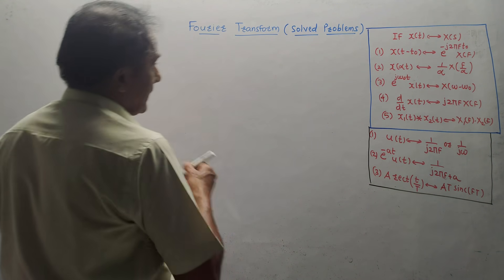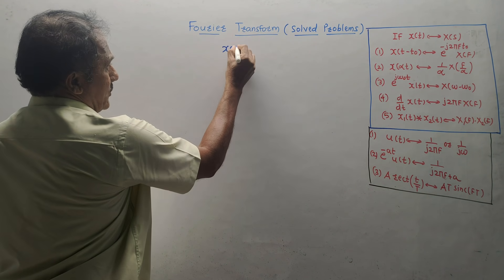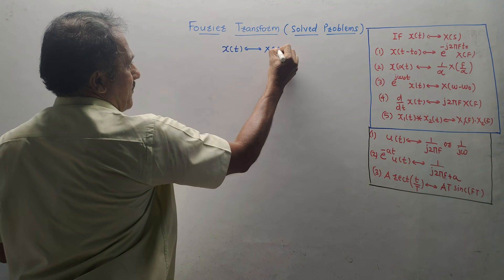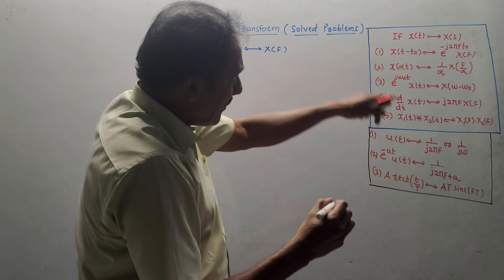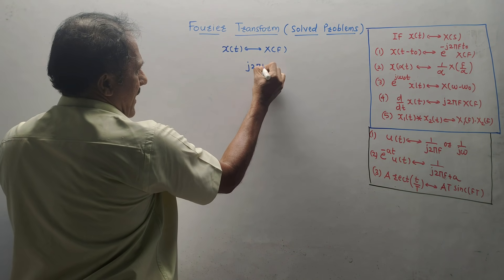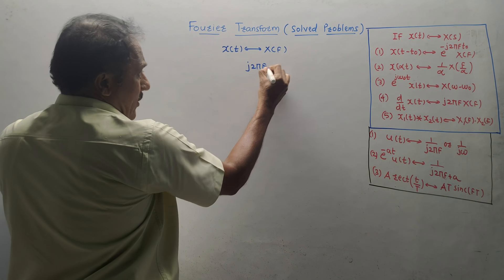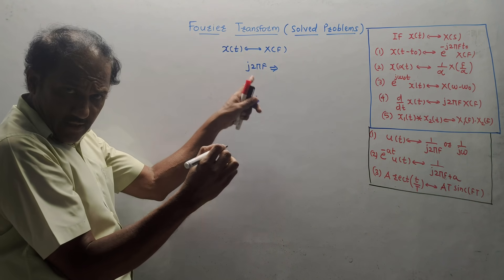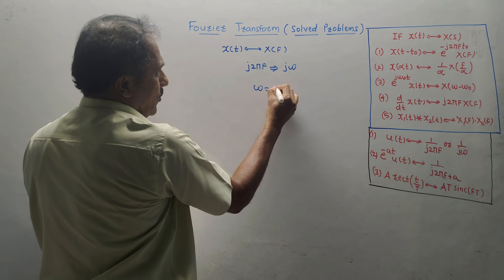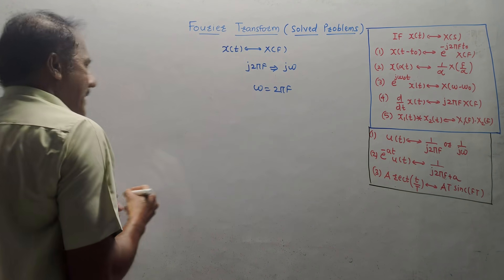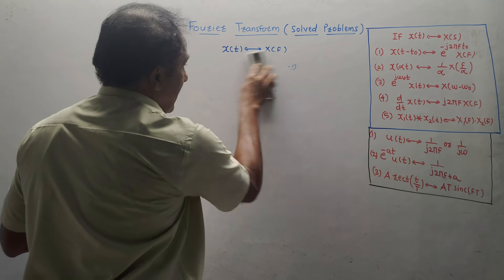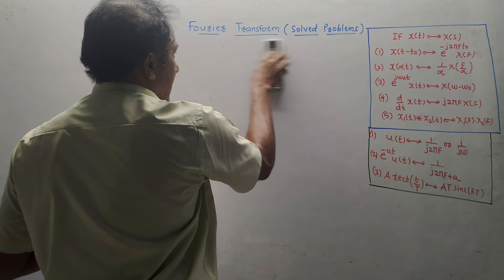One concept to keep in mind in Fourier transform: the notation is that X(F) is the Fourier transform of the signal x(T). In any property, wherever J2πF appears, you can replace it with Jω, because we know the well-known relation ω = 2πF. This technique can be used in any property or standard equation wherever required.